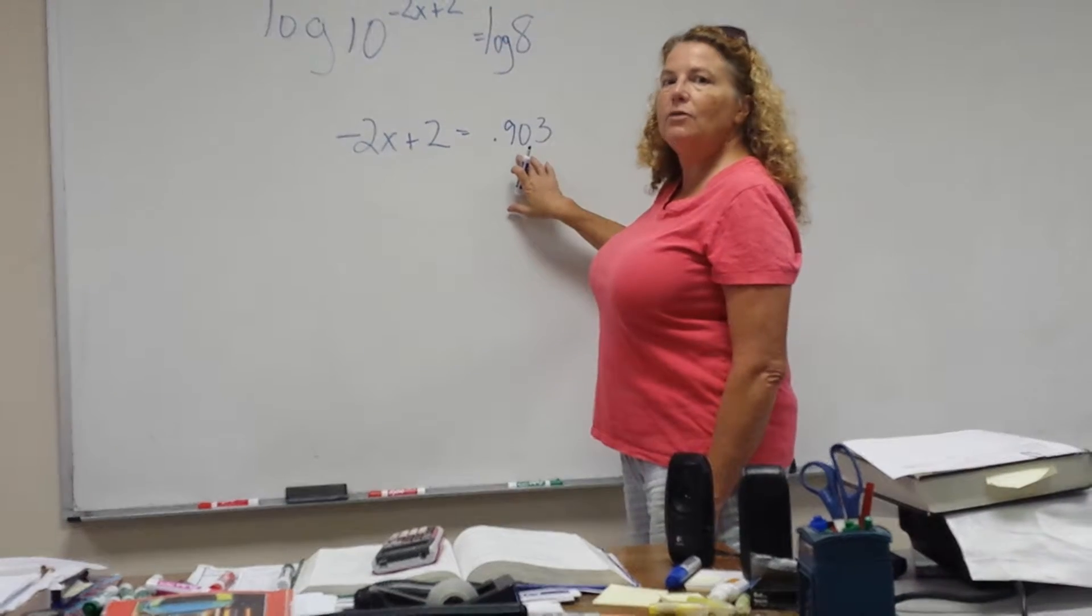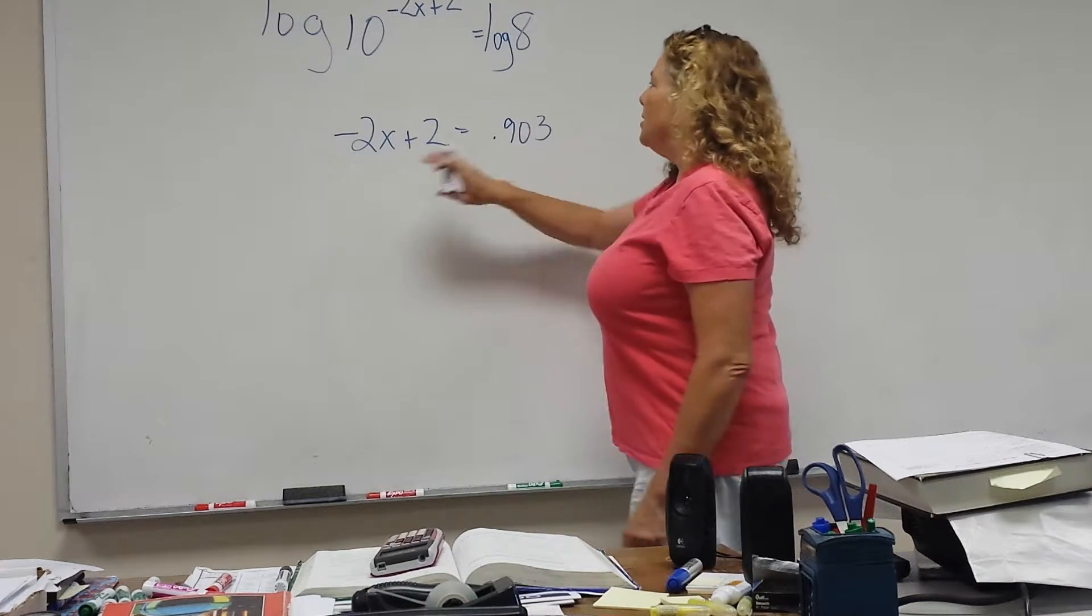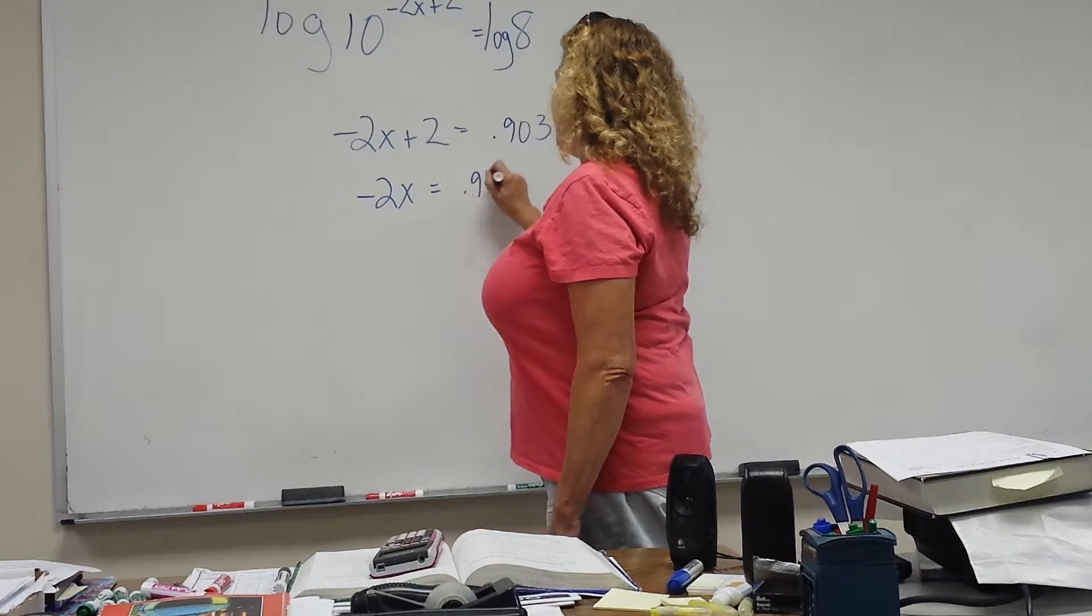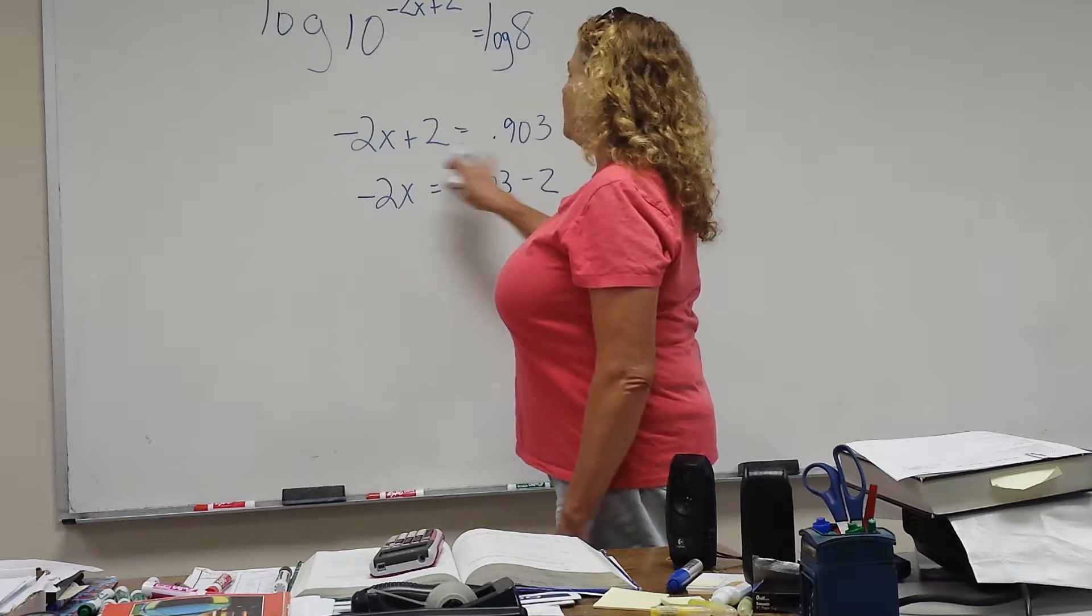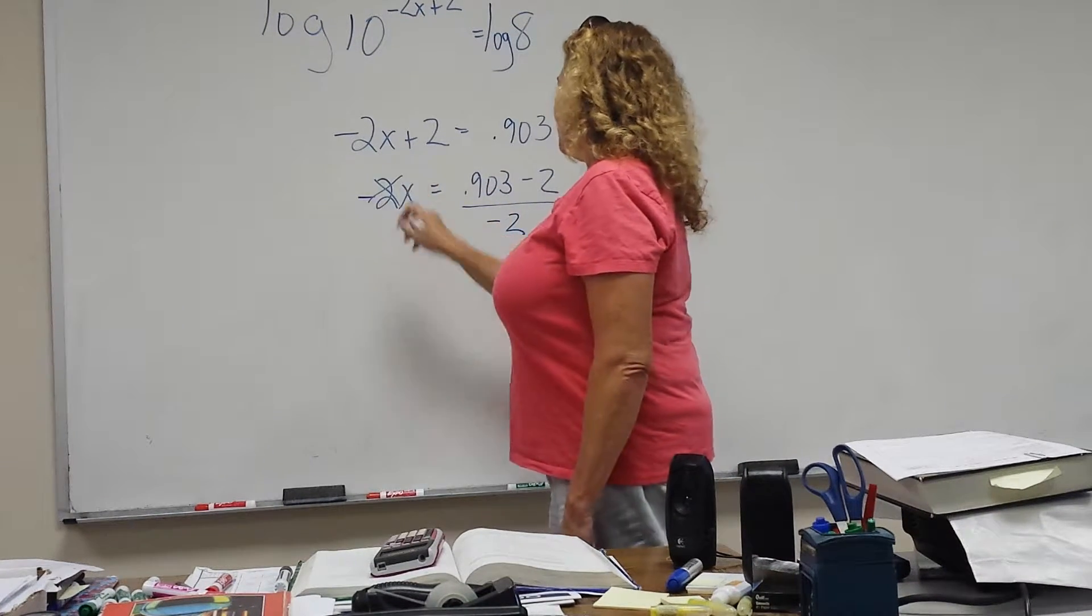And you can see 10 to the 1 would give you 10. So this has to be less than 1. So now all I have to do is solve it. Negative 2x equals .903 minus 2. Once again, we're solving like a regular equation. And then you divide by negative 2 to get x.